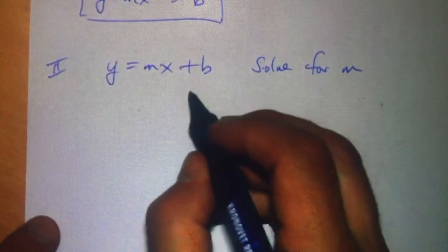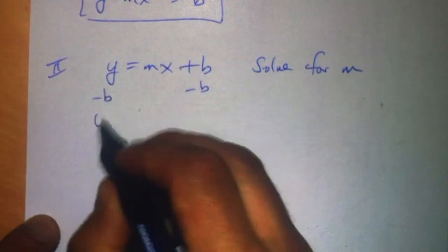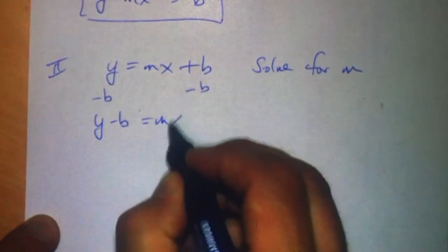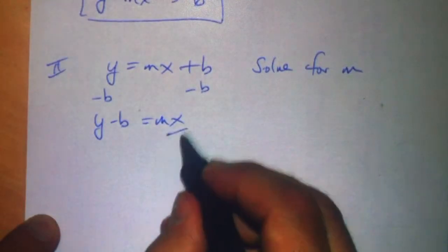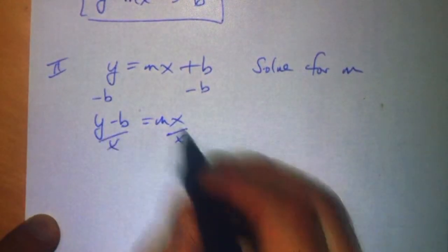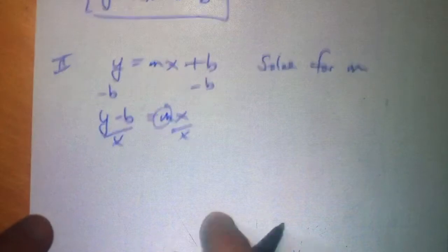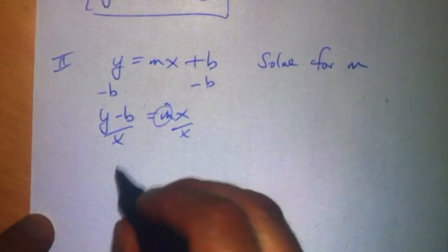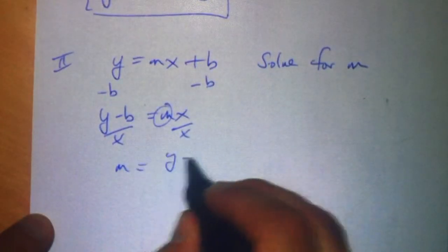Same deal with the b. We want to move that onto the other side. We get y minus b equals mx, and divide by x this time because we want to clear everything away so that we have just m on one side. m equals y minus b over x.